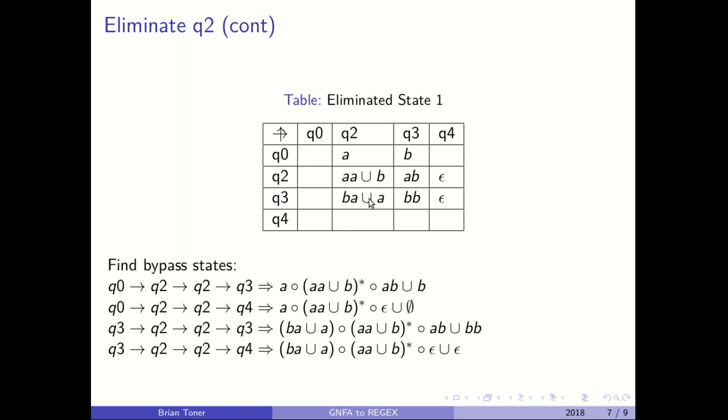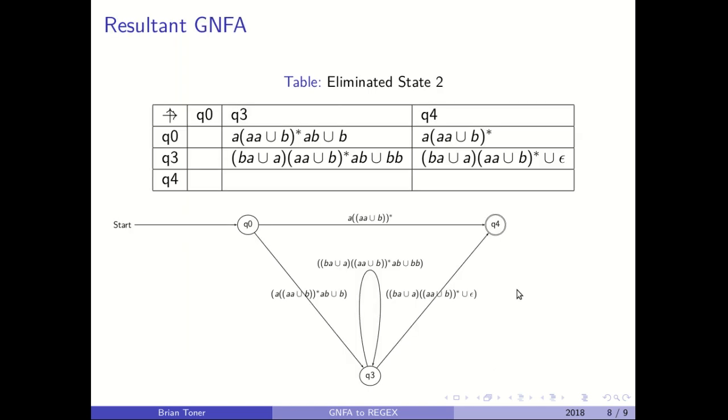So we'll take this BA union A, concatenate it with this AA union B, concatenate it with this epsilon, and then union it with this other epsilon. And that's exactly what we did here. And this will result in a new GNFA.